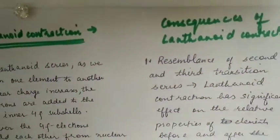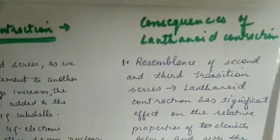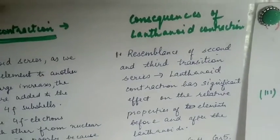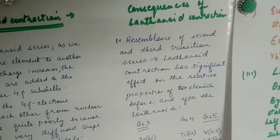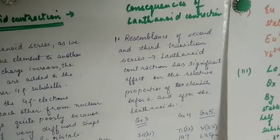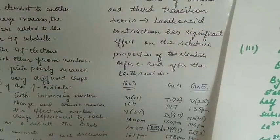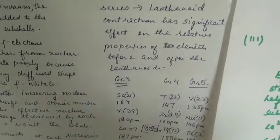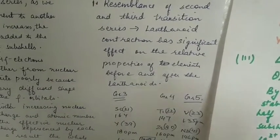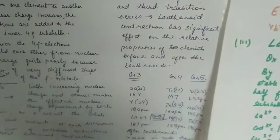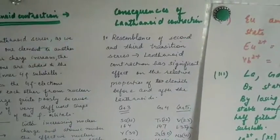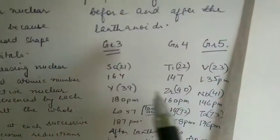Consequences of lanthanoid contraction. Number 1: resemblance of 2nd and 3rd transition series. In D-block elements, we have seen that the size of 2nd and 3rd transition series elements are relatively close and resemble each other, and their properties also resemble. That reason is lanthanoid contraction. You can compare it.